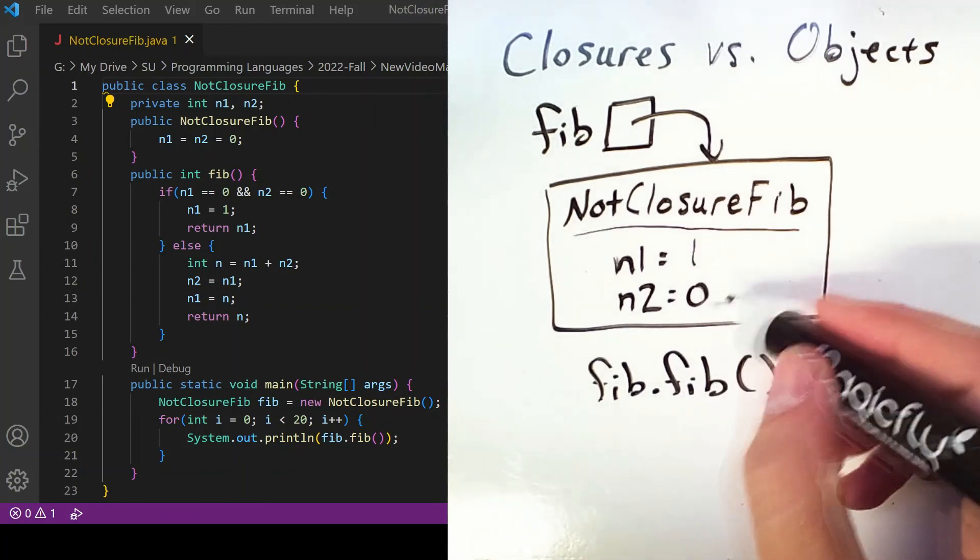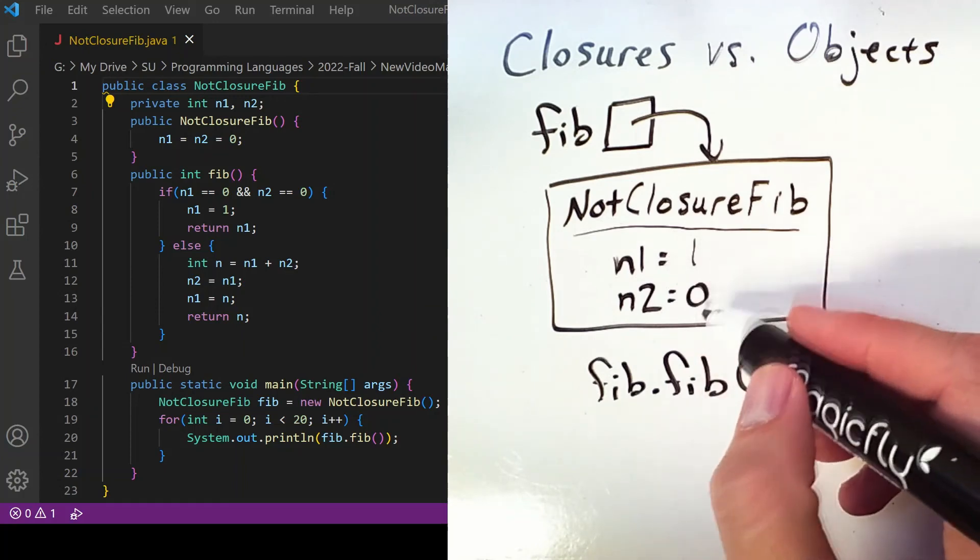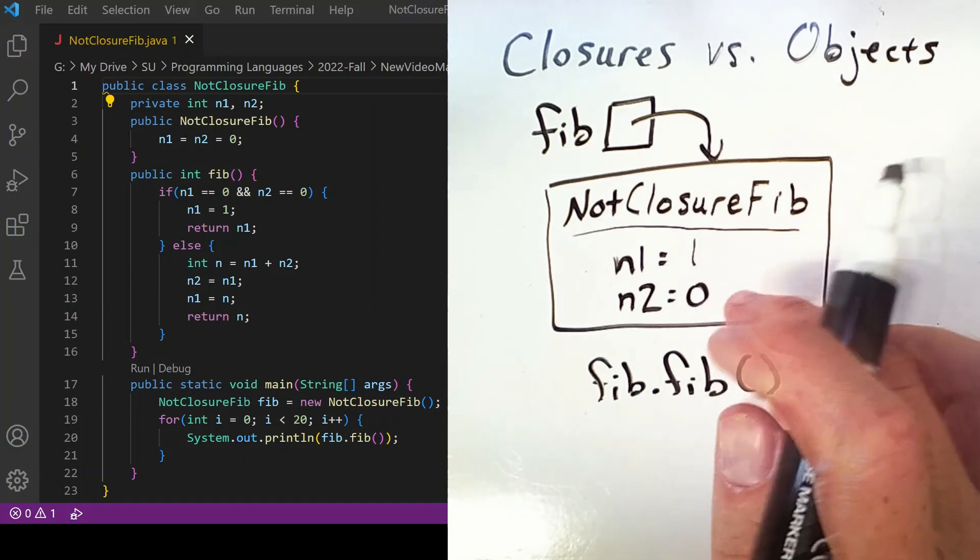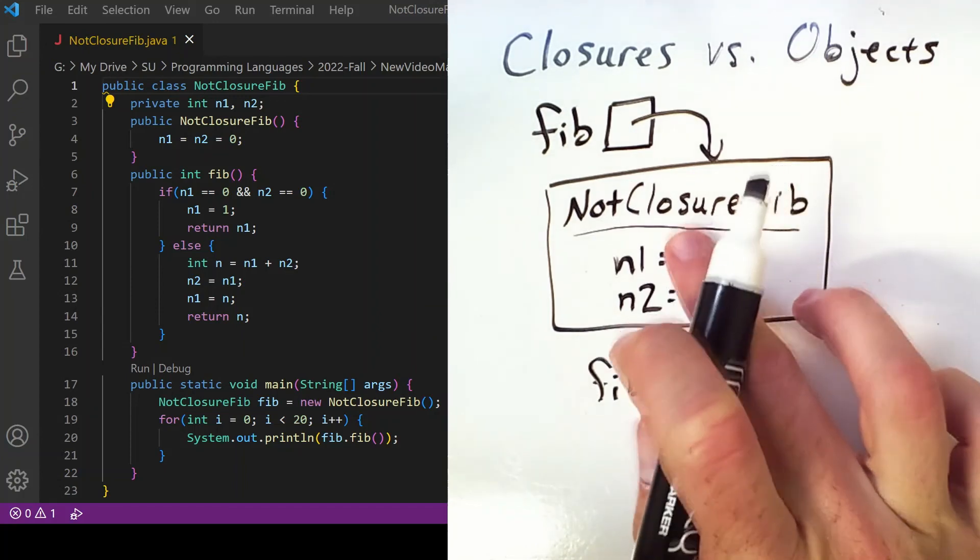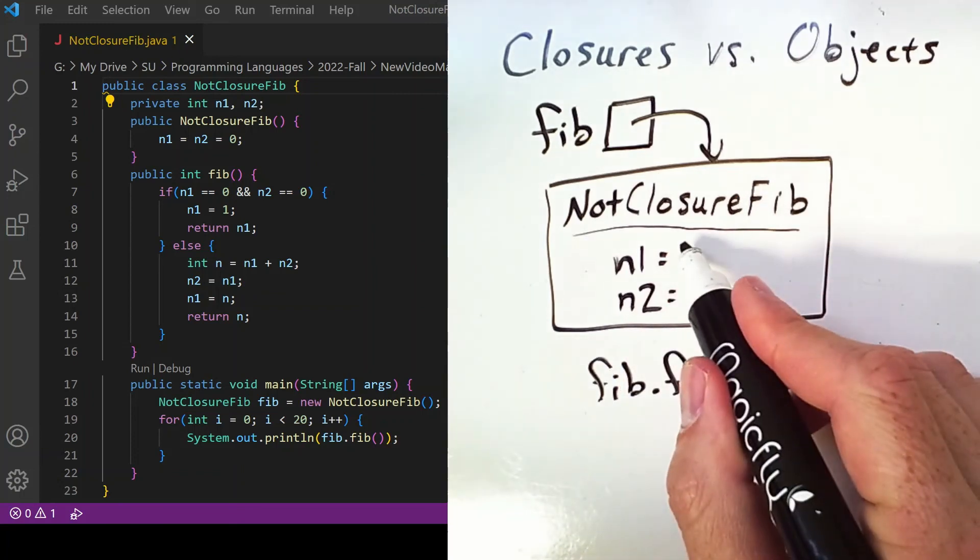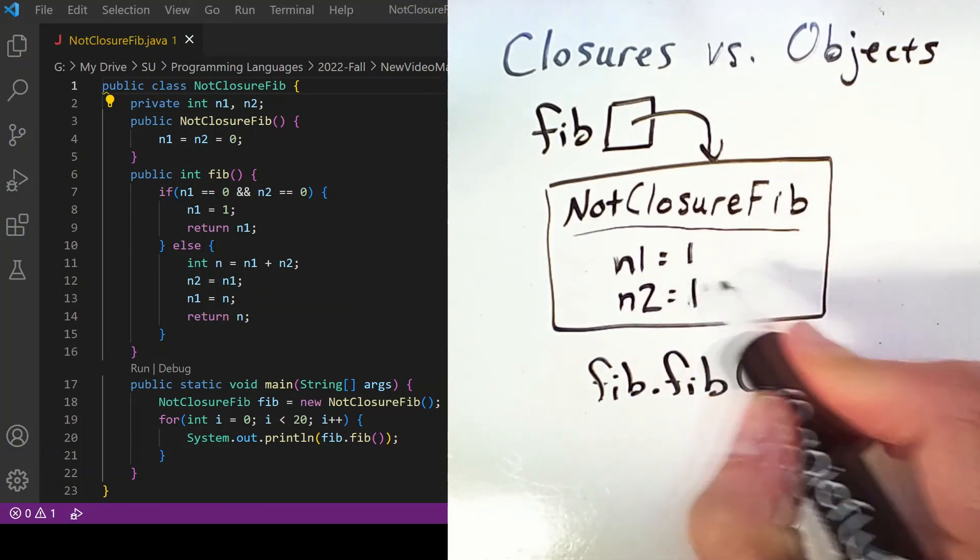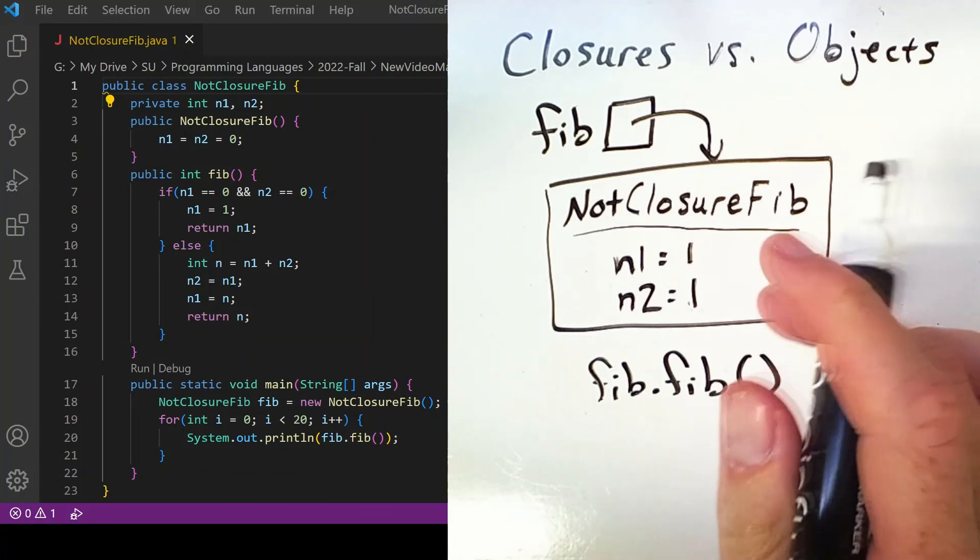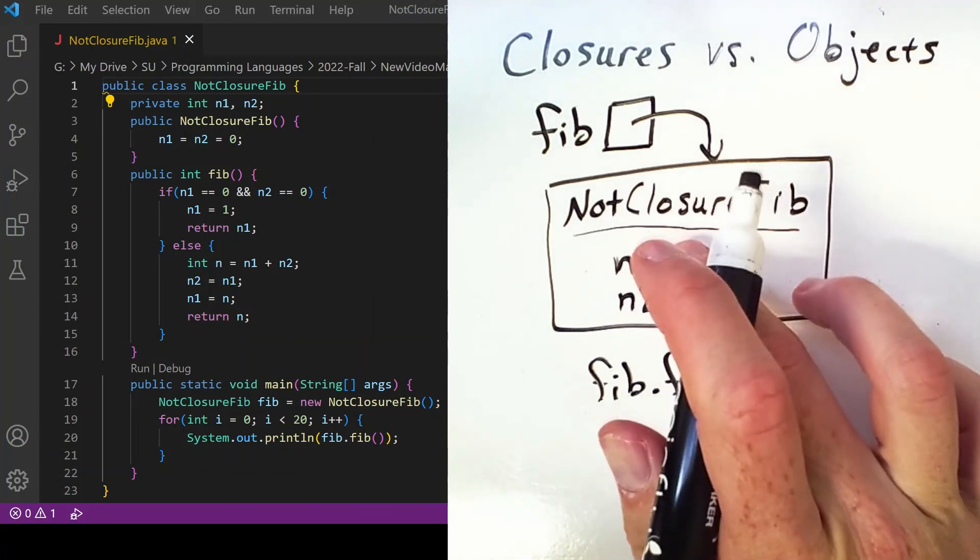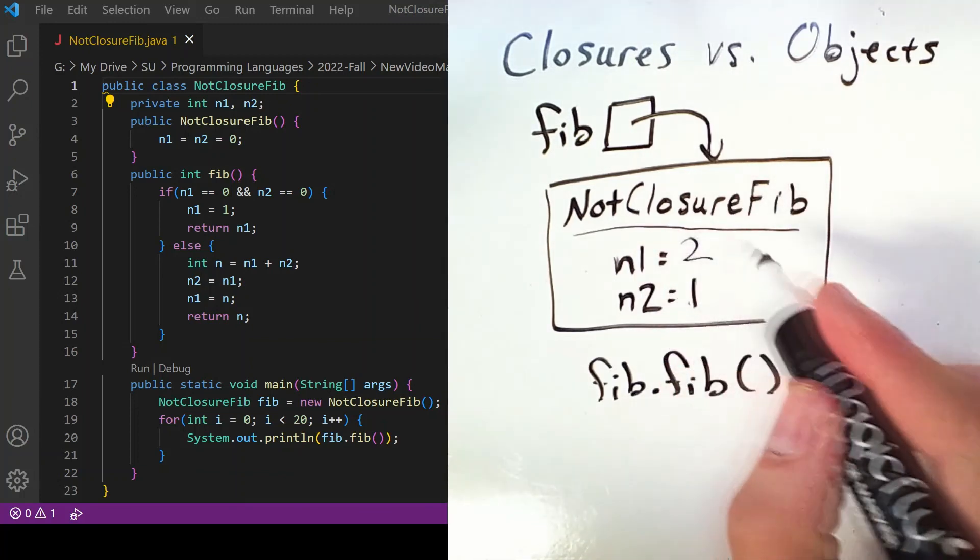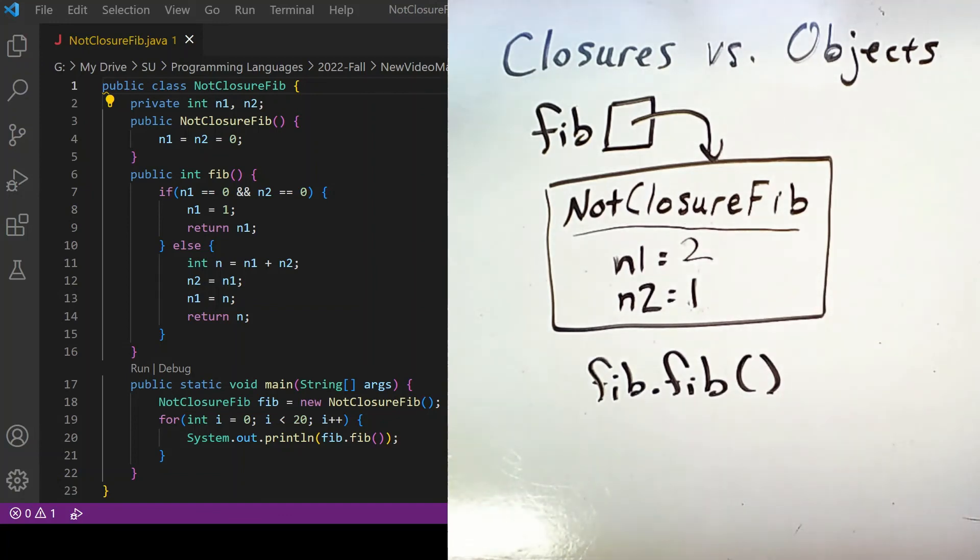And so the first call updates n1 to be one, n2 is still zero. The next call will leave us with a one and a one, and then we'll have a two and a one, and so on, which is how we go through the sequence. So closures, objects—use whichever you like or whichever is available in whatever language you're using.